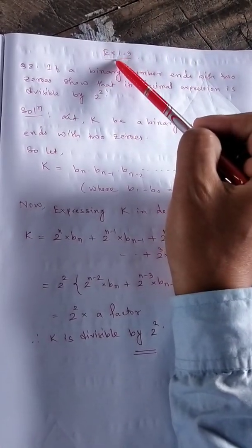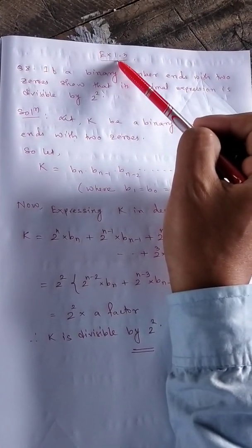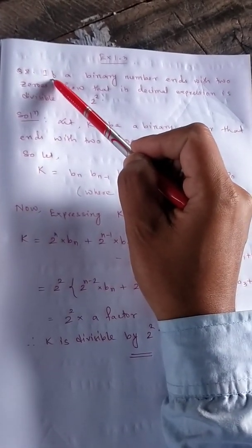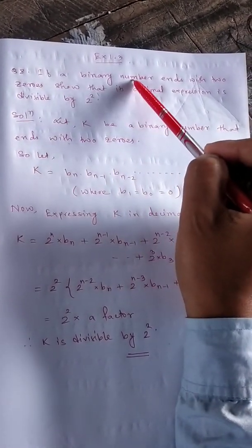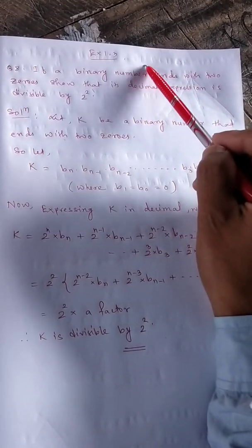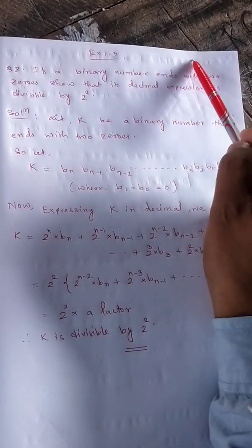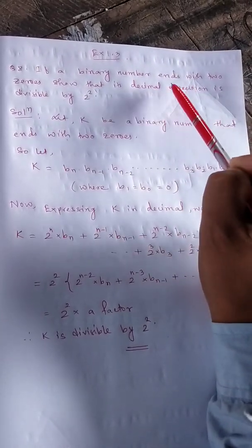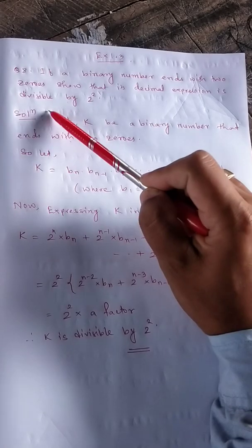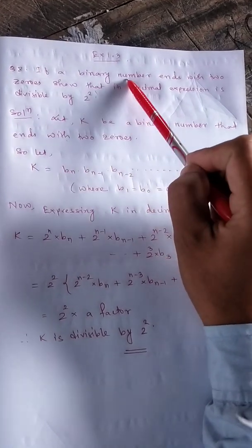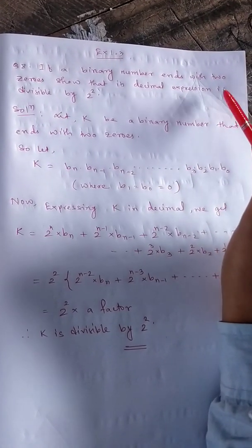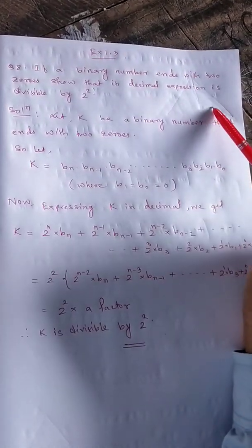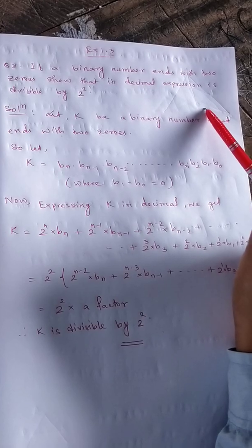Today we're going to start Exercise 1.3, question number eight. The question states: if a binary number — which uses only zeros and ones — ends with two zeros, then its decimal expression (base ten) is divisible by two squared. Binary means base two; decimal means base ten. We need to show that if a binary number's last two digits are zero, it is divisible by four.